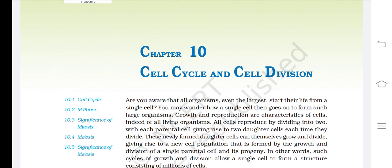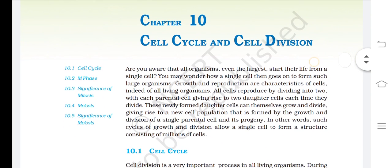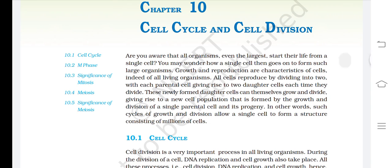All cells reproduce by dividing into two, with each parental cell giving rise to two daughter cells each time they divide. These newly formed daughter cells can themselves grow and divide, giving rise to a new cell population formed by the growth and division of a single parental cell and its progeny. Such cycles of growth and division allow a single cell to form a structure consisting of millions of cells.